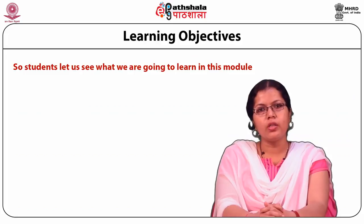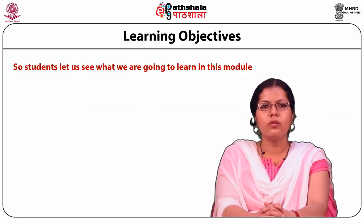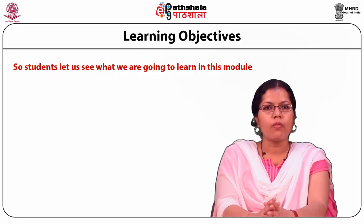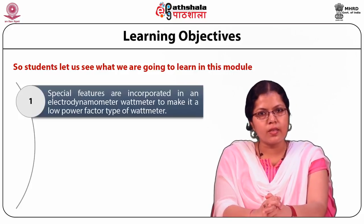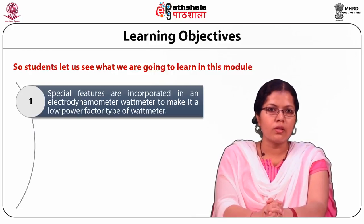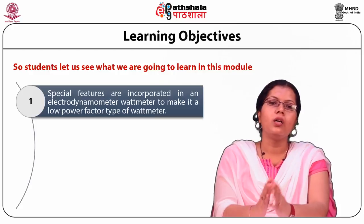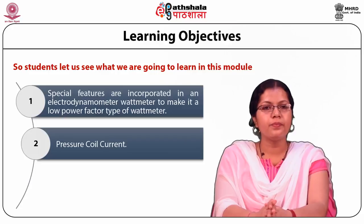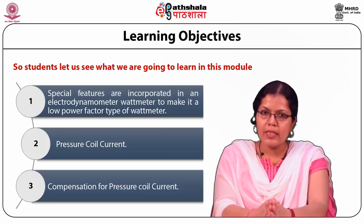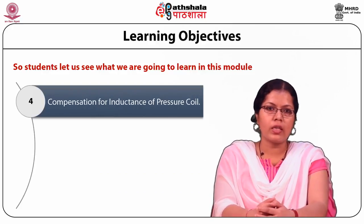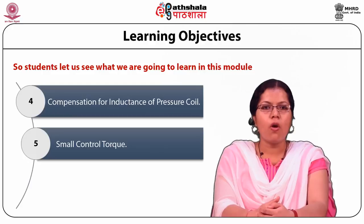From this module, students may get to know about the following topics. First of all, the Low Power Factor Type Wattmeters. We will see that special features need to be incorporated in an Electrodynamometer Wattmeter to make it a Low Power Factor Type of Wattmeter, like Pressure Coil Current, Compensation of Pressure Coil Current, Compensation for Inductance of Pressure Coil, and Small Control Torque.